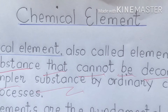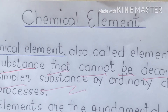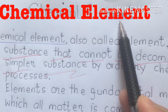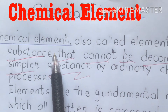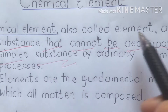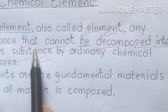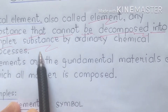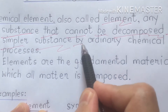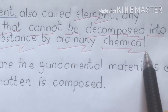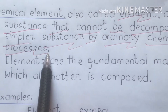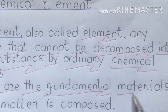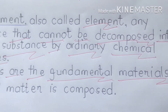Good morning class, good morning my dear students. So today we are going to discuss about chemical elements. What is a chemical element? A chemical element is also called an element — any substance that cannot be decomposed into a simpler substance by ordinary chemical processes.